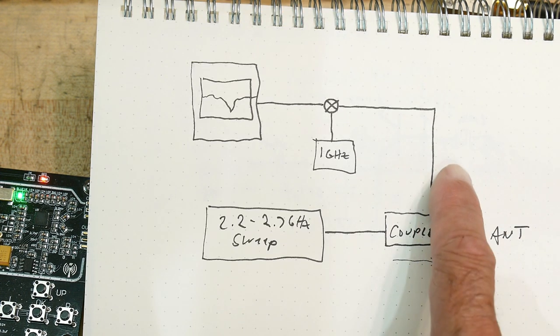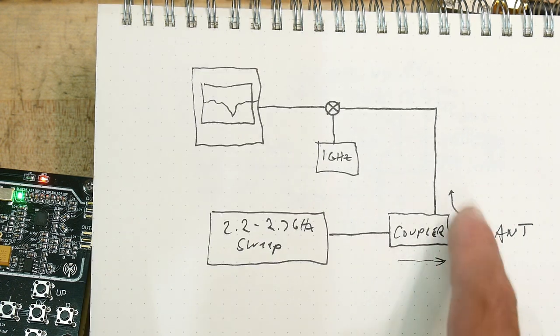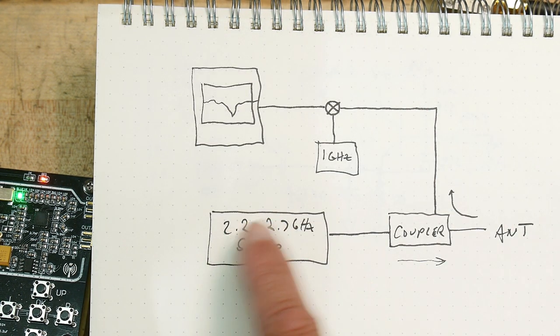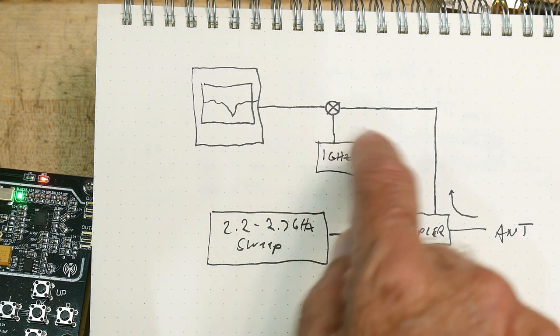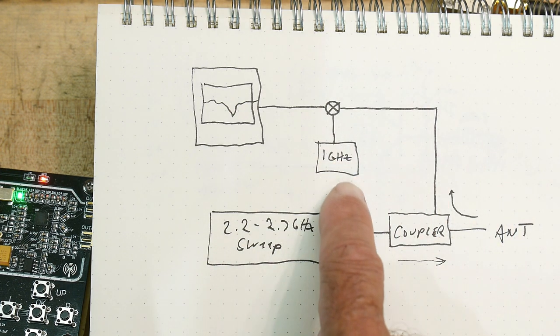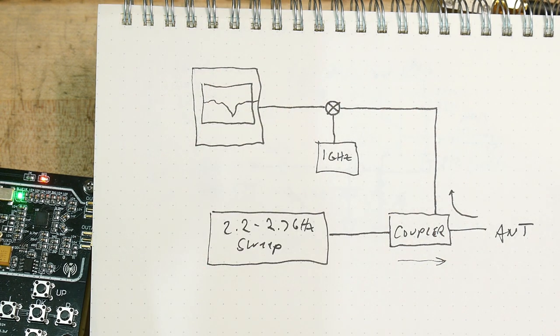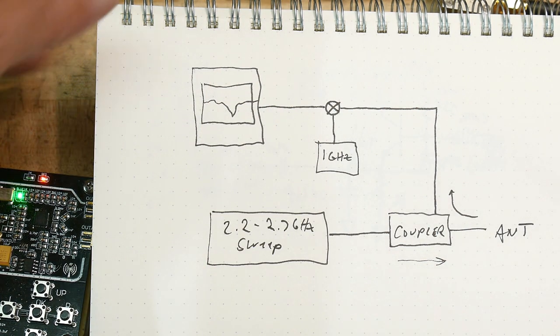Then if anything is reflected back, it'll come out the port here and I'll put that into a spectrum analyzer. Unfortunately my spectrum analyzer doesn't go this high in frequencies, so I'm going to take whatever comes back, mix it with 1 GHz and down convert it, and that will go into the spectrum analyzer.